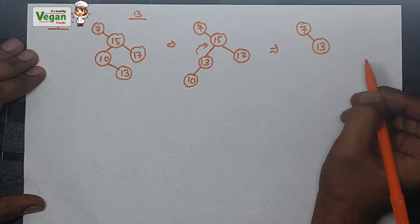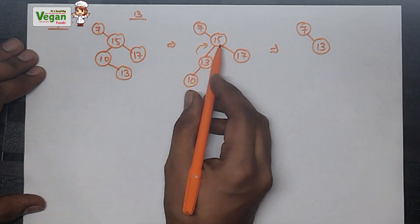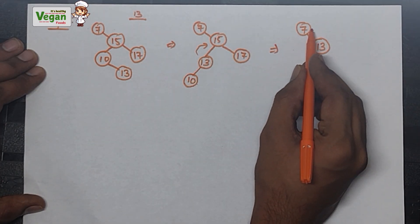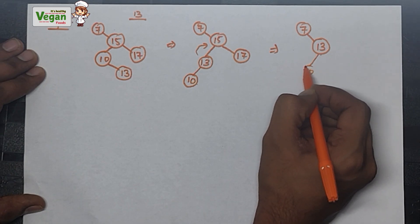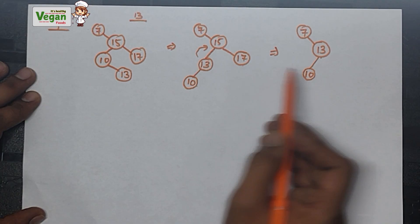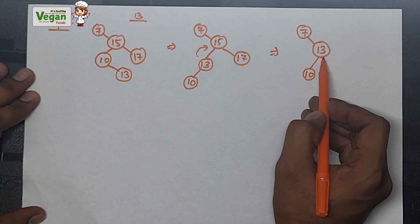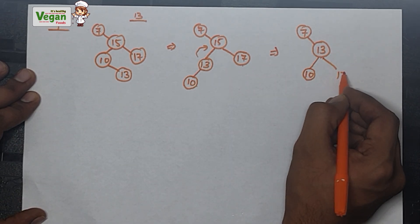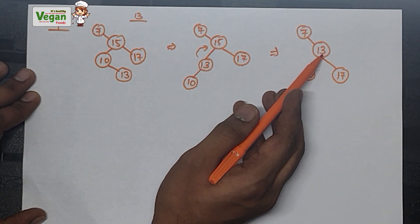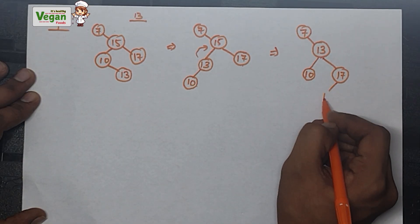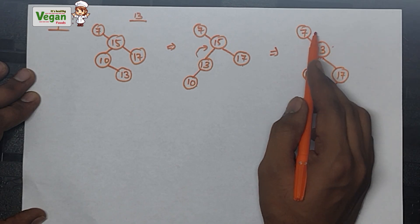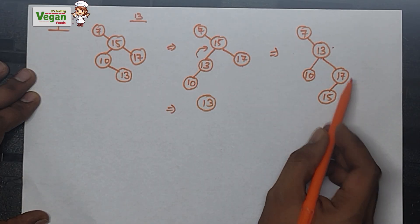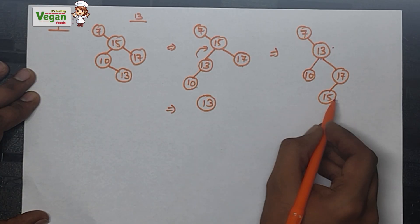Go one level upside: 7 stays, 13 replaces 15. What are the three values left? 10, 15, and 17. Going from down to upside, first is 10: 10 is greater than 7 but less than 13, so left side. Next value is 17: greater than 7 and greater than 13, so right side. Next value is 15: greater than 13 but less than 17, so left side of 17. Now my newly inserted 13 must go one more level to become the root node.